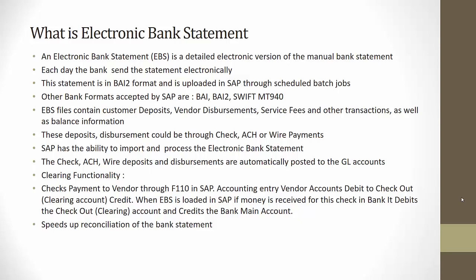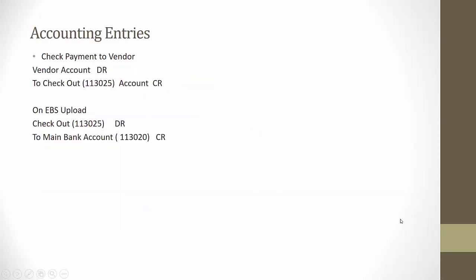Let us understand the accounting involved in EBS. When we do the automatic payment run in transaction code F110, the accounting entries passed are: the vendor account to whom the payment is made is debited, and we have an intermediate check account — called the check-out account — which is credited. Both are balance sheet accounts. Vendor account is debited and the check account is credited.